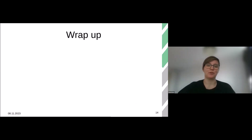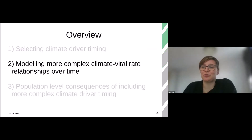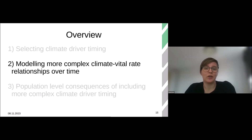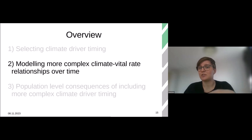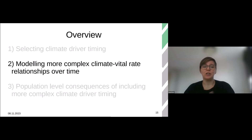To quickly wrap this up: what we see is that dormant season and lagged climate drivers are very much prevalent in plant vital rates. This brings us to the second section, where we look at how we can increase the complexity of climate and vital rate relationships over time, and what that would bring us as we try to forecast for populations. The sliding window analysis I used in the previous section takes the average temperature or average precipitation across the whole time frame being considered. That is great because it's easy to understand, the package is great, and easy to use, but it doesn't give you a lot of complexity within the time frame.